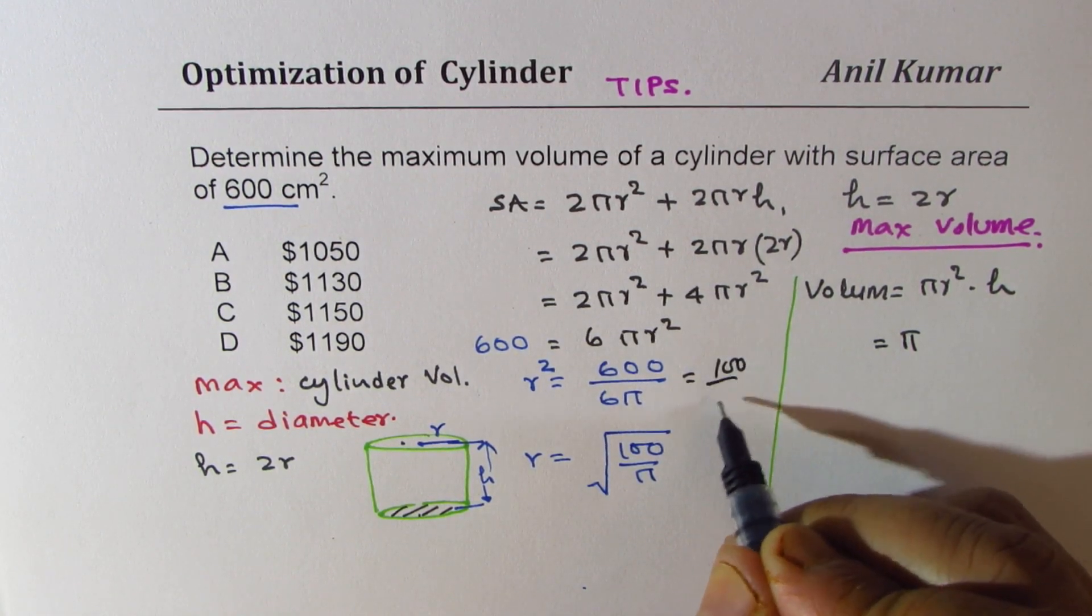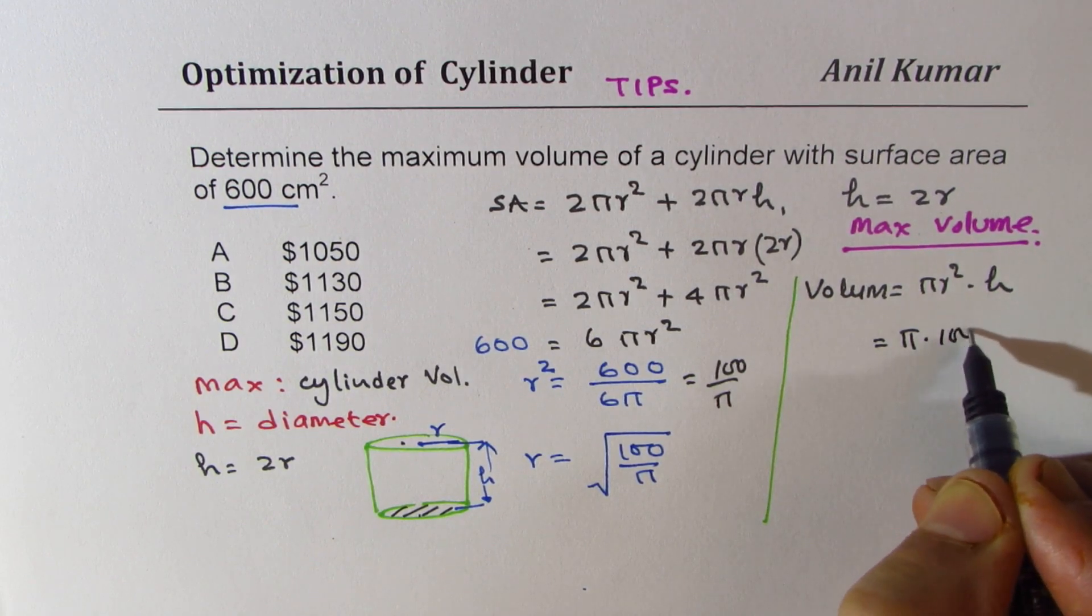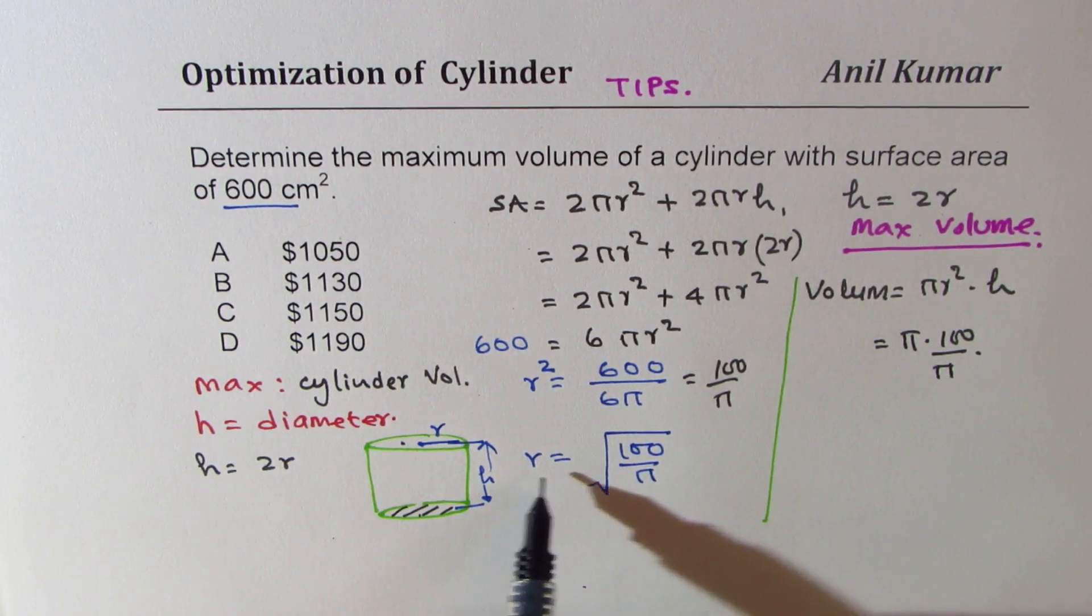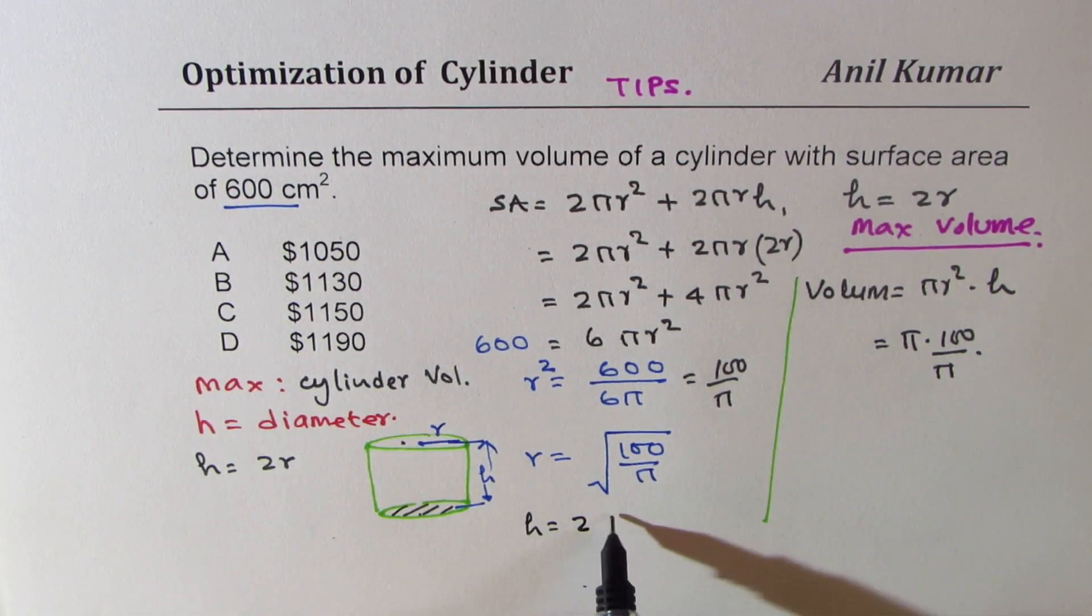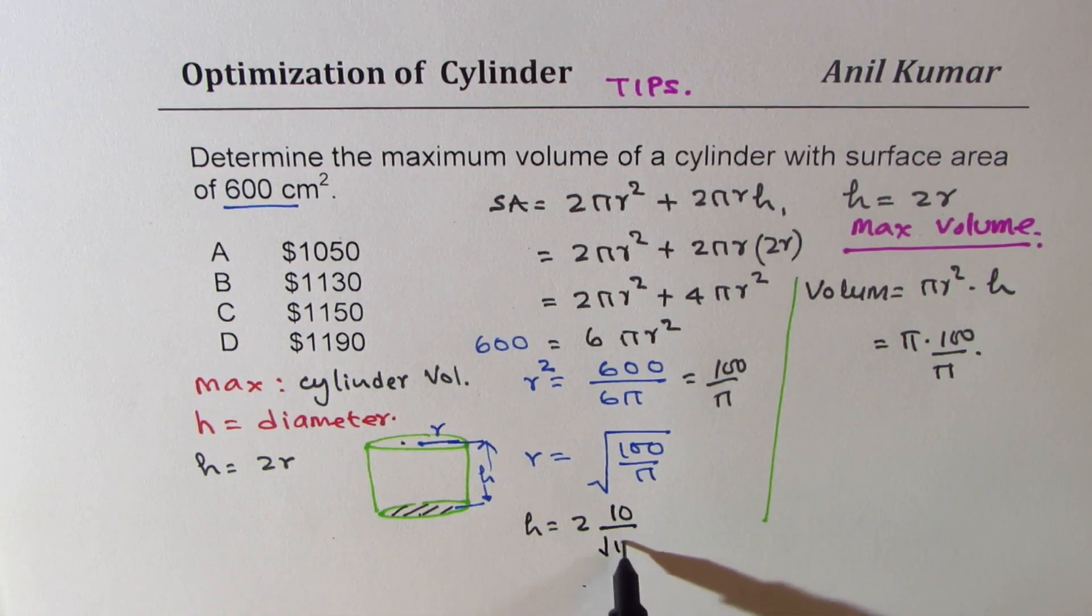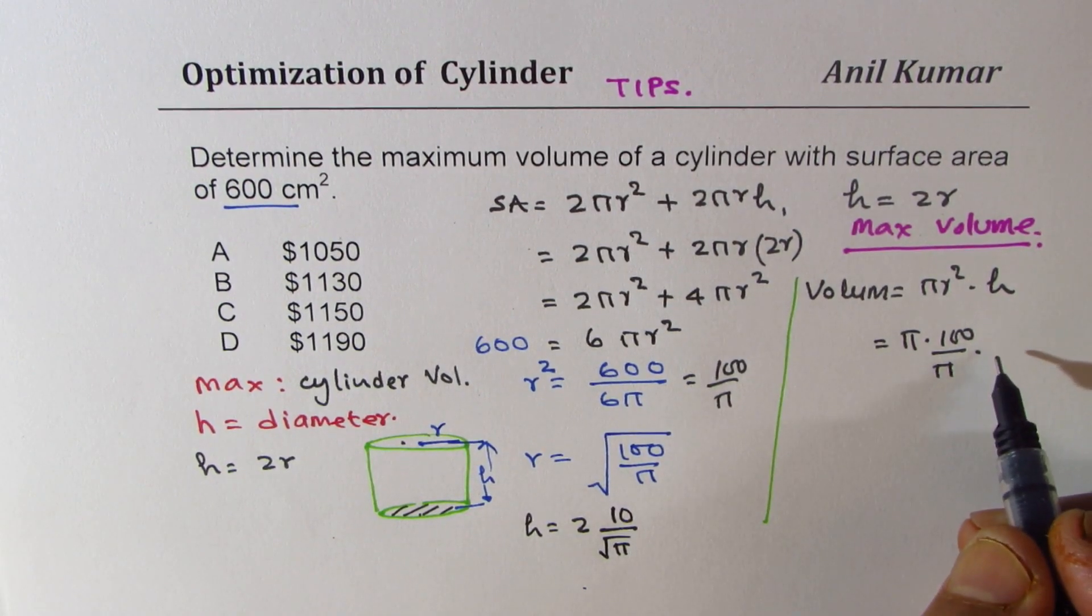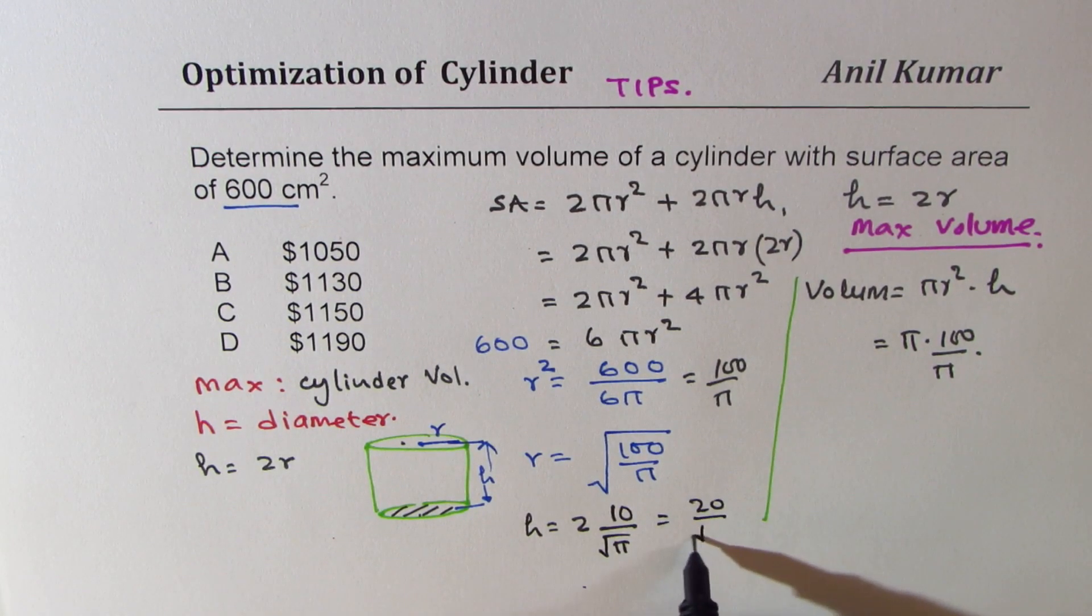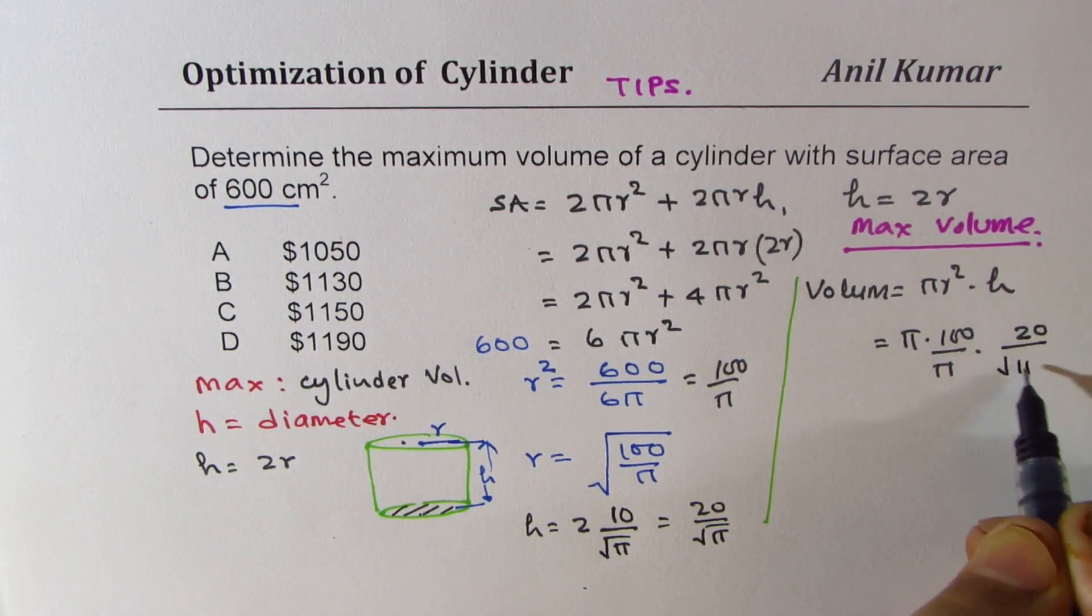So what we get here is pi times radius square. I could write this as 100 over pi. 6 cancel. So times 100 over pi times height, which is 2 times this. So height will be 2 times square root of 100 is 10 over square root pi. So we could multiply this by 2 times 10 is 20 over square root pi.